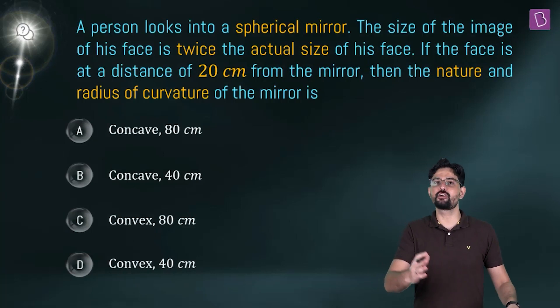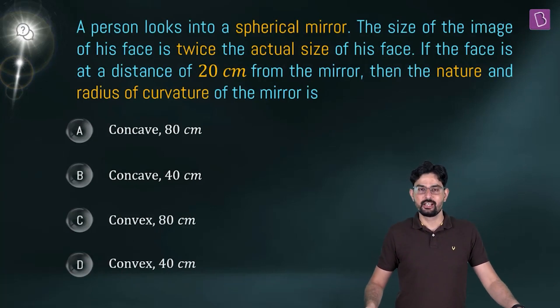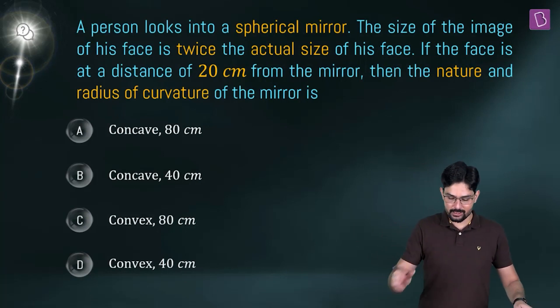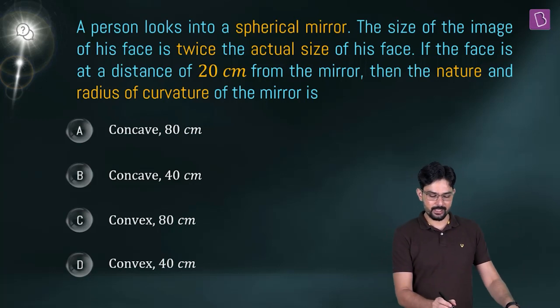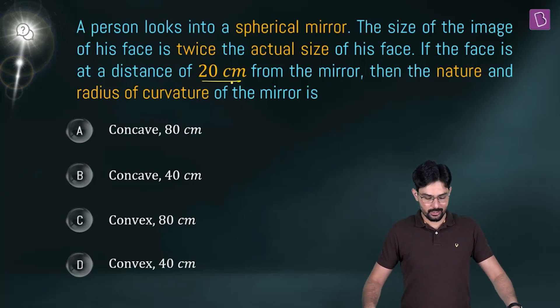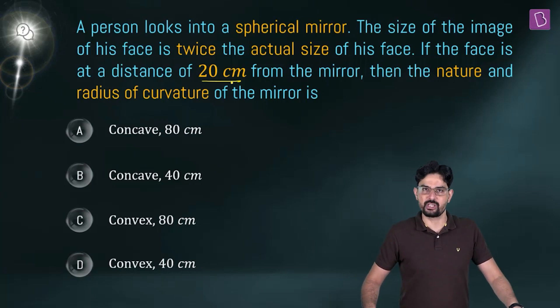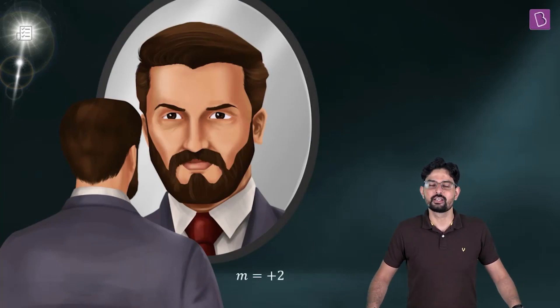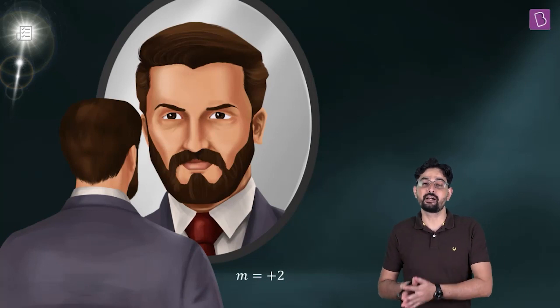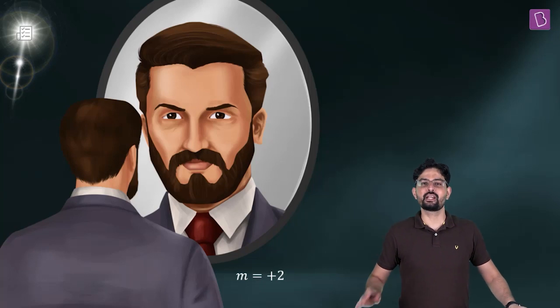A person standing in front of a spherical mirror observes that the size of the image of his face is twice the actual size of his face. If the face is at a distance of 20 cm from the mirror, then you have to tell the nature of the mirror and find out its radius of curvature. Do note that this is the image as observed by the person. So tell me, what is the nature of this image — is it virtual or is it real?